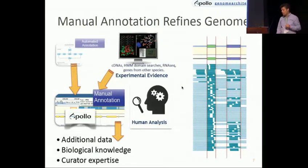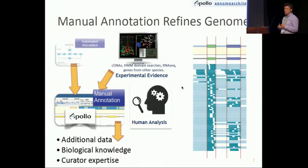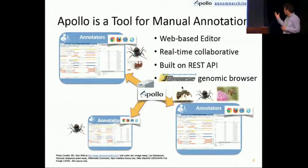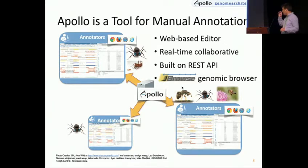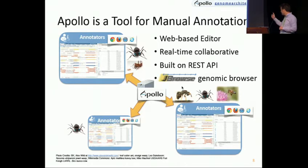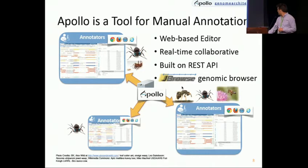This is why we advocate using manual annotations. This allows a human user to go in, pull in additional data, use their biological expertise, as well as their experience as a curator to make those judgment calls. Apollo is the tool for doing this type of manual annotation. It's an open source web-based editor. It's real-time collaborative — if you have a user in one part of the nation or one country make a change, all other users see this change instantly. It's built on top of a REST API, and most importantly, it's built on top of the JBrowse genomic browser — a really great browser for viewing genomic data.